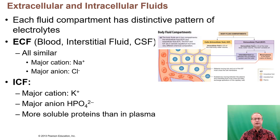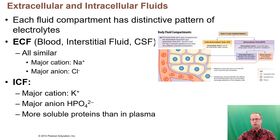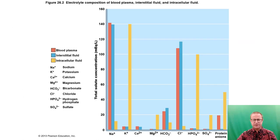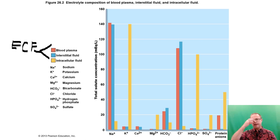Each fluid compartment has a distinctive pattern of electrolytes. The extracellular fluid comprises blood, interstitial fluid, and cerebrospinal fluid, whereas the intracellular fluid is made up only of what's inside the cells. Looking at a graph comparing ionic composition: blood plasma and interstitial fluid — both part of the extracellular fluid — are very similar in ionic composition, while intracellular fluid is very different.